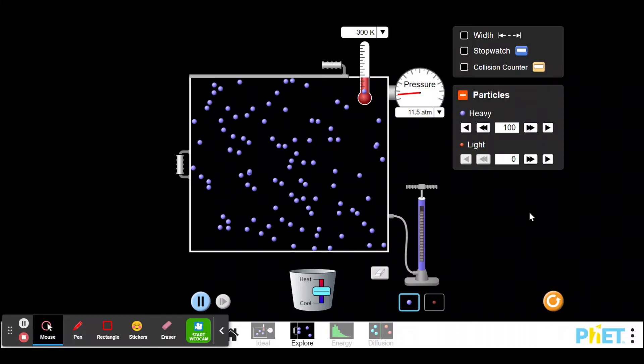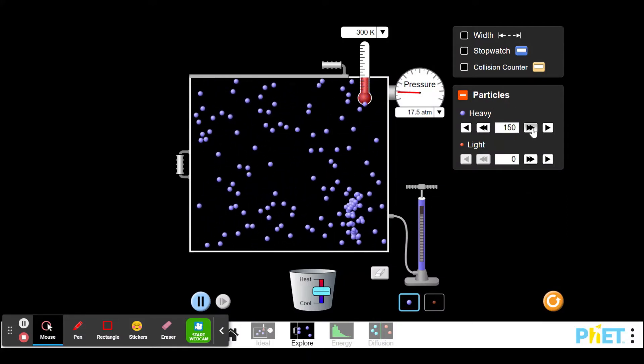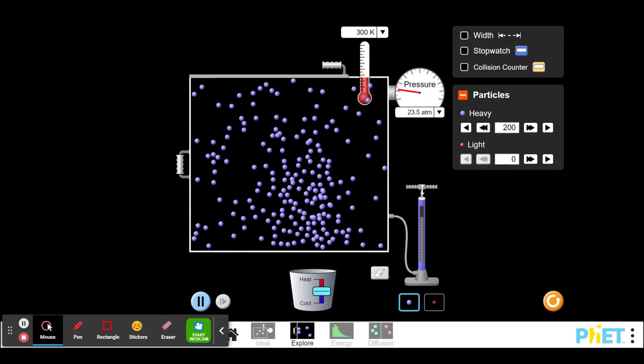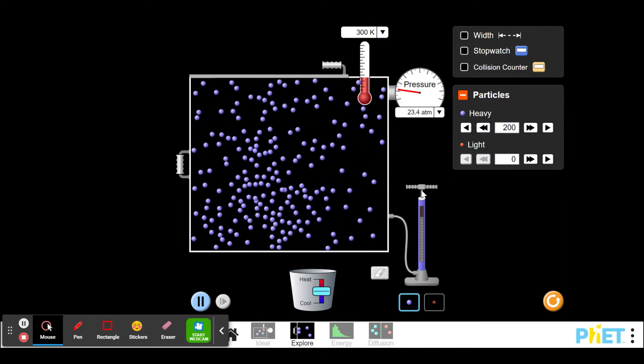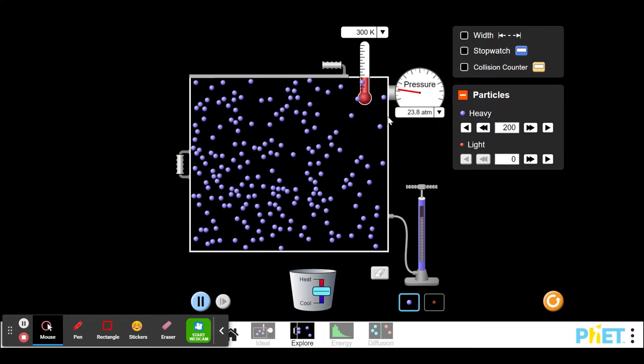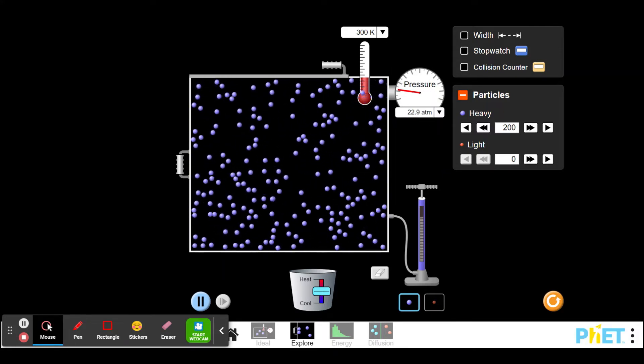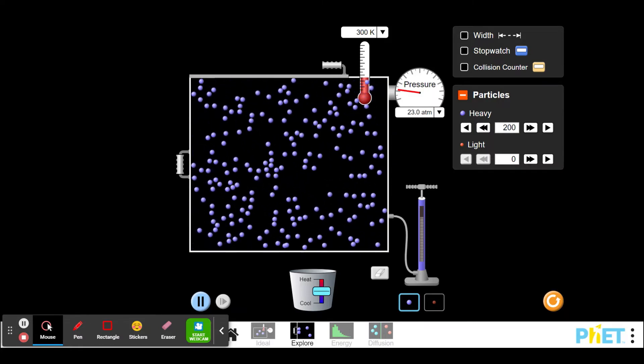And then I'm going to add 100 more particles and I'm going to allow that to equilibrate. And now that I'm looking at the pressure, it's going 23.2, 23.5, 23.1, 23.7, 23.9. I've got a 24 in there, so between 23 and 24 looks like where I'm at, kind of staying mostly in the mid 23 point area.